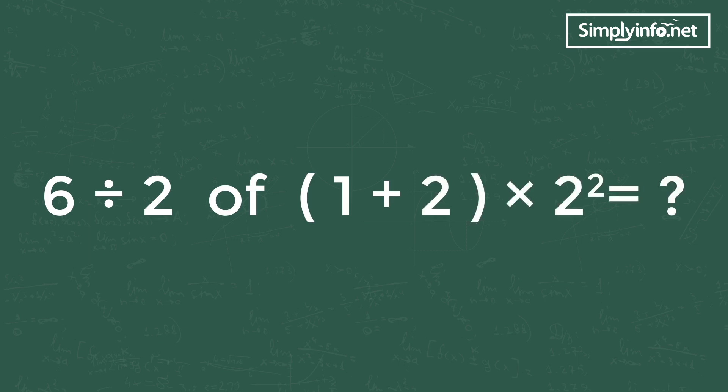Let's go to our main equation: 6 divided by 2 of (1 + 2) multiplied by 2². We can see one bracket operation in the problem, that is 1 + 2.